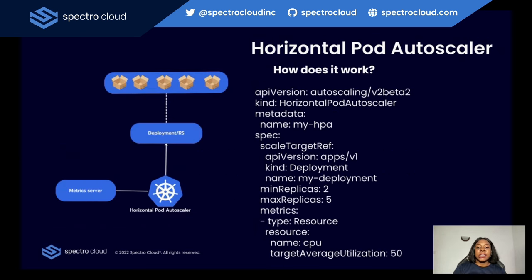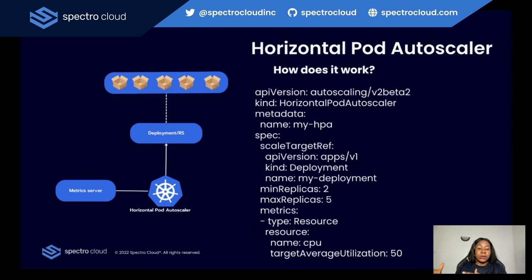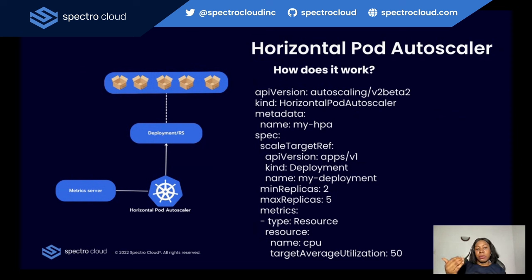If you look at the diagram, you can see that HPA continuously monitors metrics like CPU or custom metrics for pods in a target deployment. Users can set target values or thresholds for desired metrics, and HPA evaluates the current metric values against those targets to make scaling decisions. So if metrics exceed or fall below targets, HPA adjusts the number of pod replicas. As a user, you need to define constraints like minimum or maximum replicas to prevent excessive scaling.